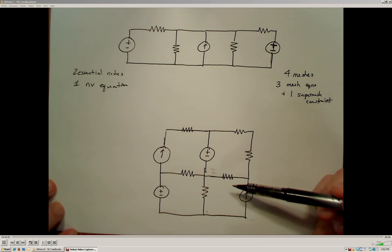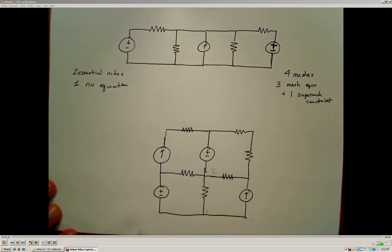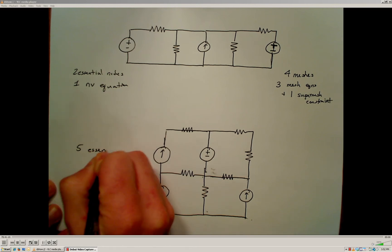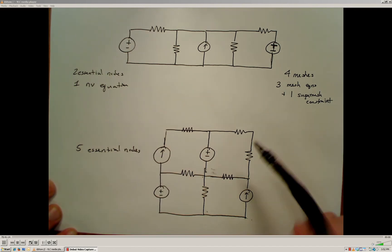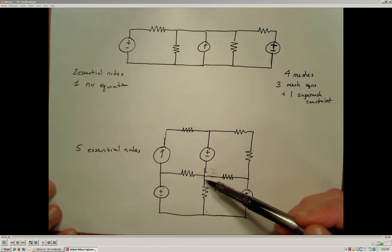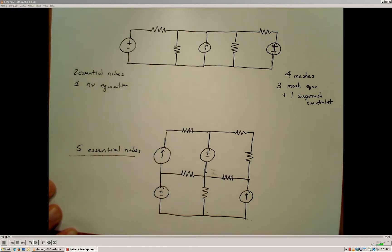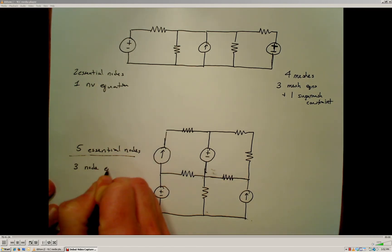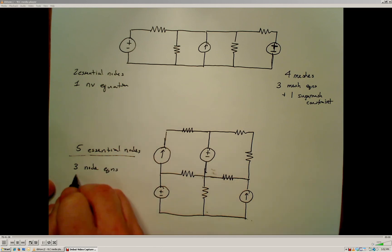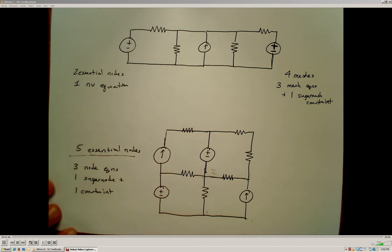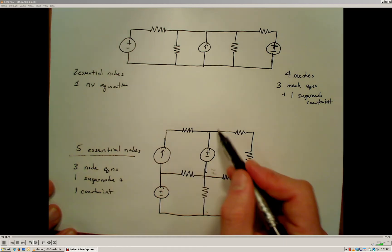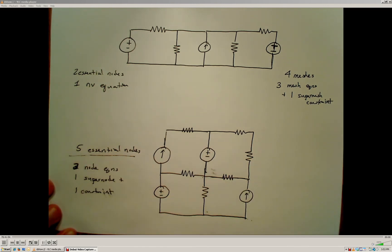Now looking at a different circuit, applying the same analysis: for the node voltage method we have five essential nodes, which would require four node voltage equations. However there's a voltage source connecting two of the essential nodes, which creates a super node. So what we actually need is two node equations, one super node equation, plus one constraint equation for that super node — four equations in total.